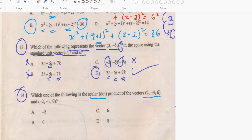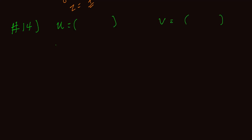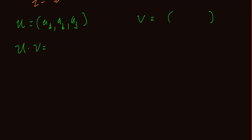Question number 14: which one of the following is the scalar product of the vector (2, -4, 6) and (-2, -1, 0)? Let vector u and v be given. The scalar product, shown as u dot v — the dot product. In general, if we have two vectors (a1, a2, a3) and (b1, b2, b3), the dot product is a1 times b1 plus a2 times b2 plus a3 times b3.